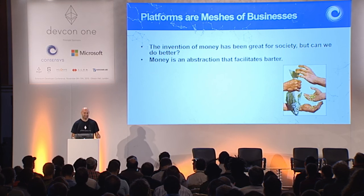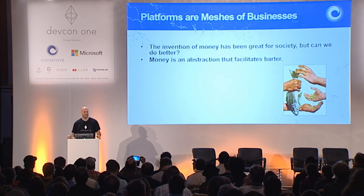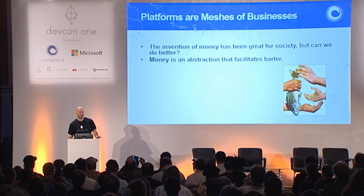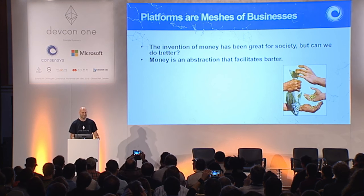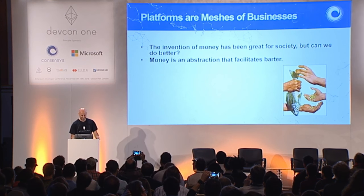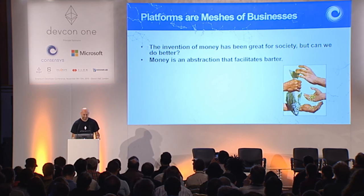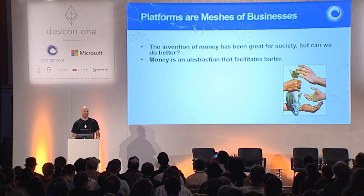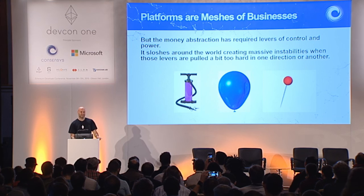The invention of money has been spectacular for society. Even top-down command and control has taken us quite far, which is quite spectacular. But we can probably do better. Money is an abstraction that facilitates barter, but the money abstraction has required levers of control and power.